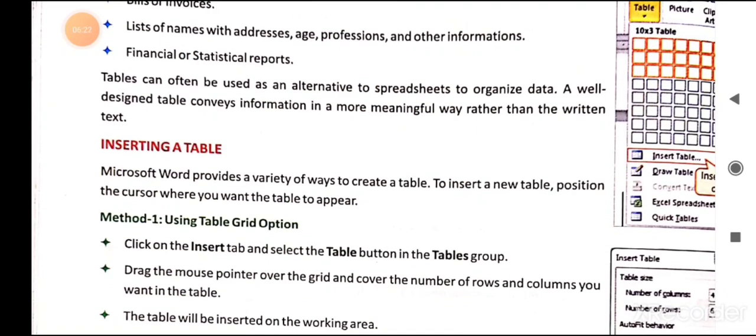To summarize Method 1: click on the Insert tab and select the Table button in the Tables group. Then drag the mouse pointer over the grid and cover the number of rows and columns you want. The table will be inserted on the working area.